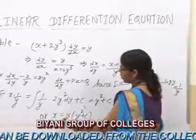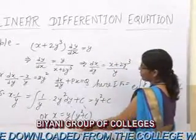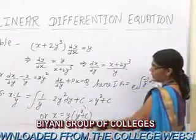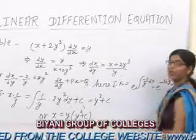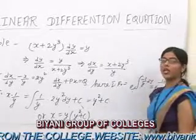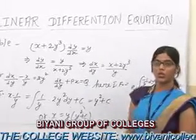x equals y times (y squared plus c), where c is any arbitrary constant.